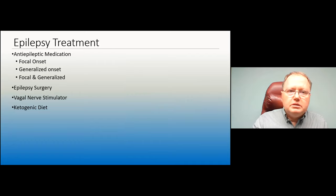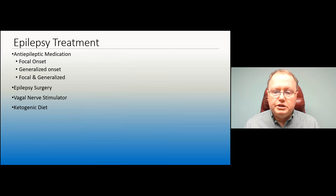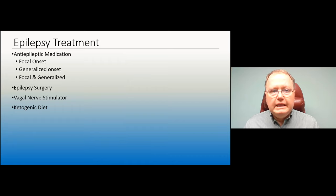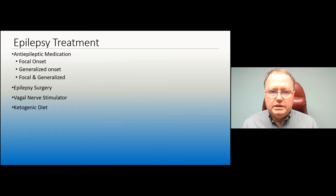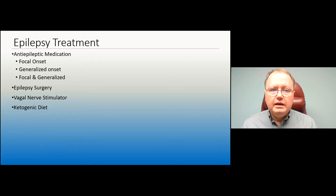Treatment options include medications — some only for focal seizures like oxcarbazepine, carbamazepine, or phenytoin; some for generalized onset like ethosuximide for absence or lamotrigine and valproate; and some broad-spectrum treating both, like valproate, zonisamide, and lamotrigine. After failing two medications, and especially three, consider epilepsy surgery if there is one focal bad region that can be resected. If not a focal candidate, consider a vagal nerve stimulator, which has virtually no side effects, or the ketogenic diet for young motivated patients or those with a G-tube.